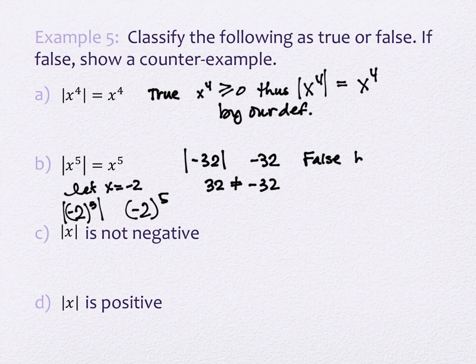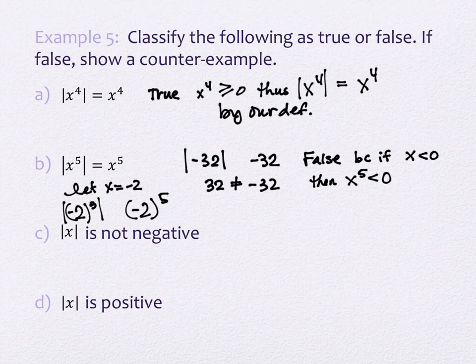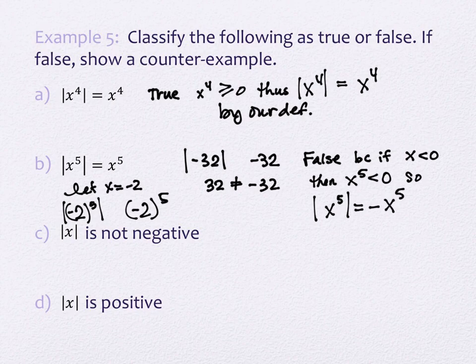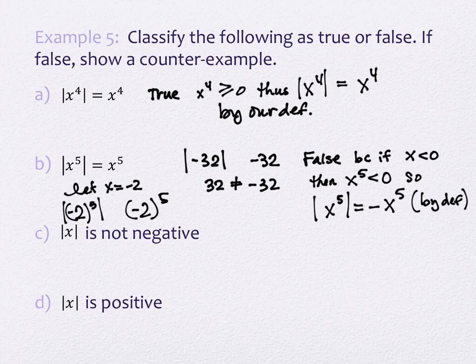The reason it's false: if x is negative, then x to the fifth is also negative. Negative 2 to the fifth was negative 32, and any negative would do that. So if x is negative, then the absolute value of x to the fifth actually equals negative x to the fifth, by definition. This negative represents the opposite of — it removes the negative that will automatically be present when a negative number is inserted.